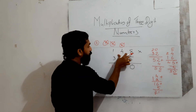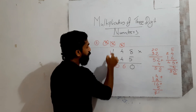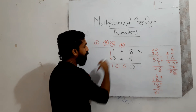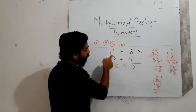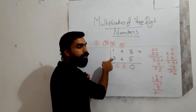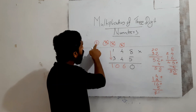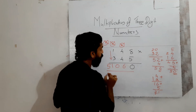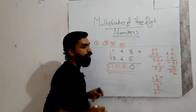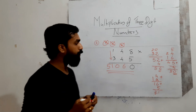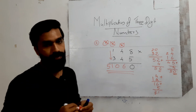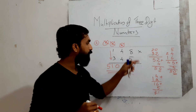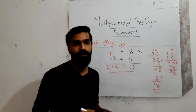Final step: multiply the leading digits 1 into 3 equals 3. Add carry of 2: 3 plus 2 equals 5. So the answer is 51,060 — that is the multiplication of 148 into 345.